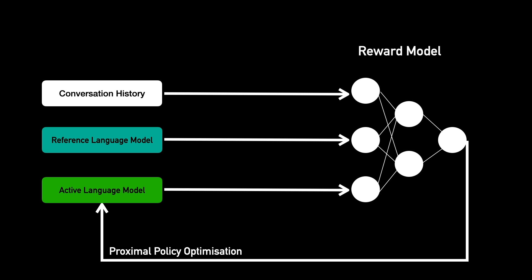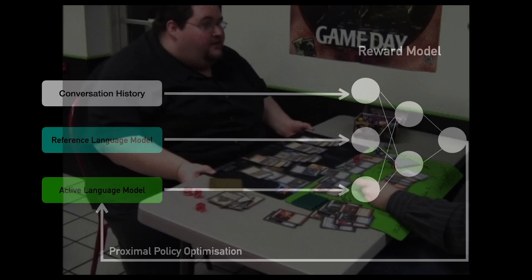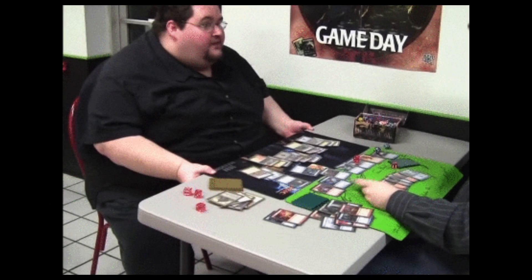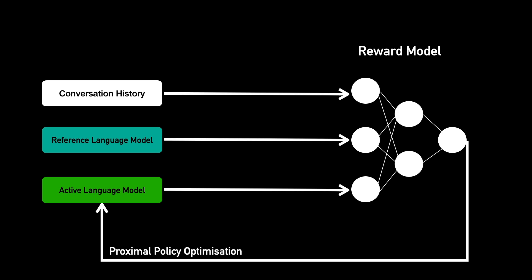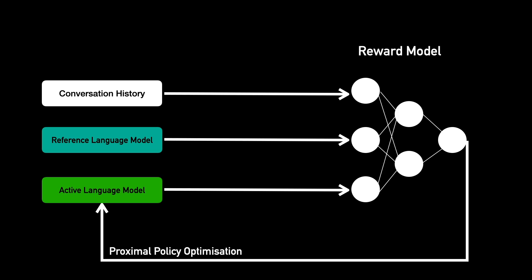To understand with an example, imagine you are playing a board game with someone and you realize you can never lose if you just flip the board over. Well, that's what the active language model may do if we just use the reward from this model to improve it.